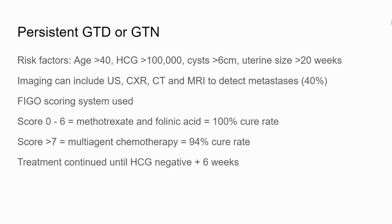Unfortunately, about 40% of women will have pulmonary metastasis. The FIGO scoring system is then used — if you're scoring in the lower risk group of 0 to 6, methotrexate and folinic acid will be used, which has a great 100% cure rate. Even where the score is more than 7, multi-agent chemotherapy has a 94% cure rate, including women with distant brain and lung metastases. Treatment is continued until the beta-HCG is negative and then for a further six weeks. The main reason treatment is so successful is that these are rapidly dividing cells, so they're very chemotherapy sensitive and there are lots of targets for the chemotherapy to work on.